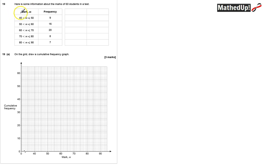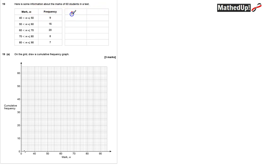Question 19. Here is some information about the marks of 60 students in a test: 9 students scored between 40 and 50, 16 between 50 and 60, and so on. We need to draw a cumulative frequency graph. I'll use a separate table with marks M and cumulative frequency CF, working out a running total for marks less than or equal to each boundary.